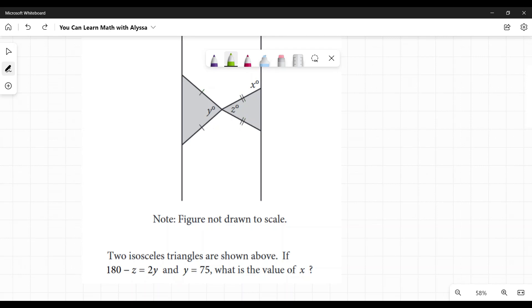If 180 minus Z equals 2Y, all right, 180 minus Z equals 2Y, and Y equals 75. Well, they've told us what Y equals. We can solve for Z first thing. That's what I'm going to do.